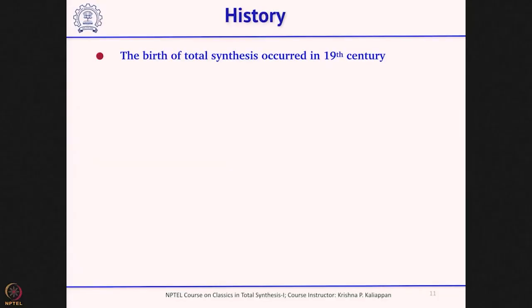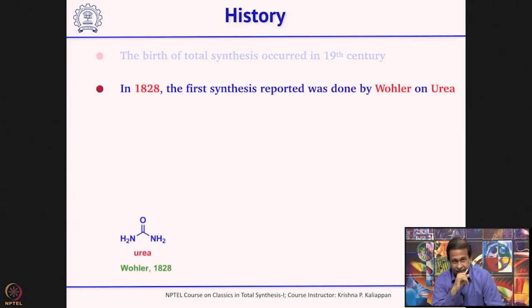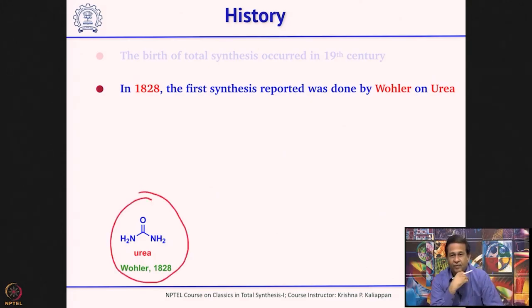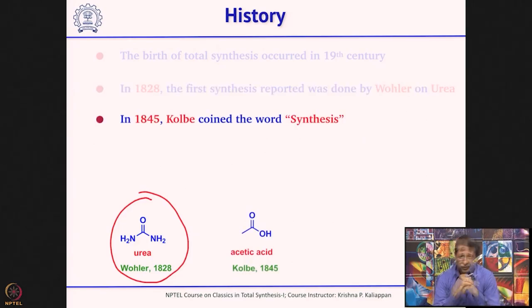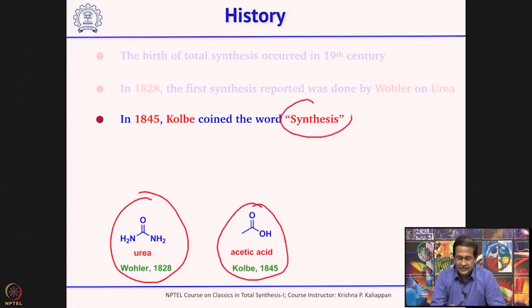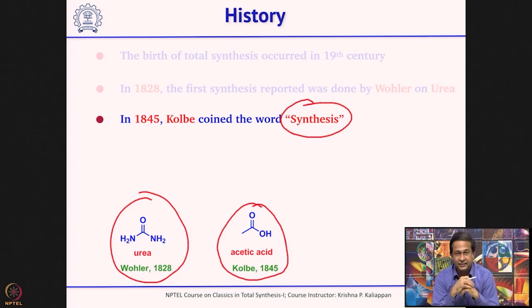When we talk about history, the first synthesis of a natural product or any organic molecule was reported in the 19th century. In 1828, the first synthesis was reported by Wöhler on urea. This urea was made from an inorganic compound and it was a 100% atom-economic reaction. Then Kolbe was the one who made acetic acid, and he was the first person to use the term 'synthesis.' I will come back later to the difference between preparation and synthesis, as people still sometimes make that mistake.